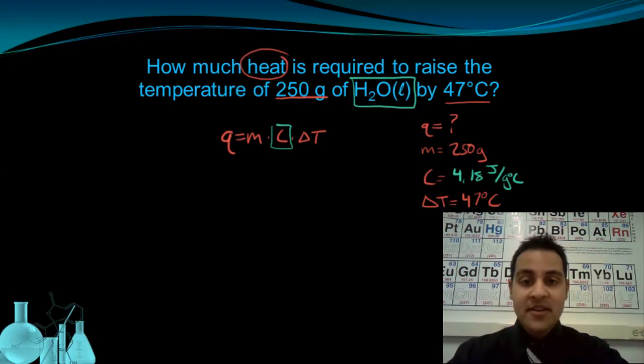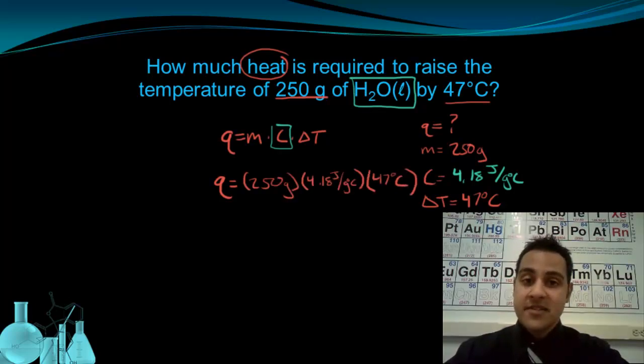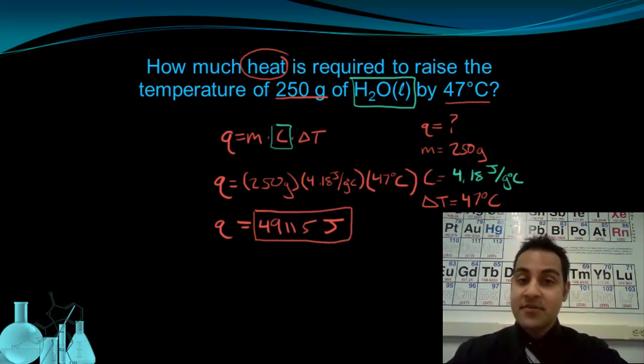Now that I have all my variables identified, I can go ahead and plug these in. Q remains a variable, and I set it equal to 250 grams times 4.18 joules per gram degree Celsius times 47 degrees Celsius. If I now evaluate this side of the equation, I'll see that Q equals 49,115 joules of energy. This is how much heat is required to raise this much water by 47 degrees Celsius.